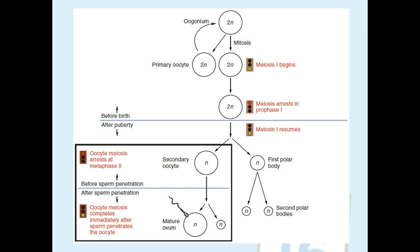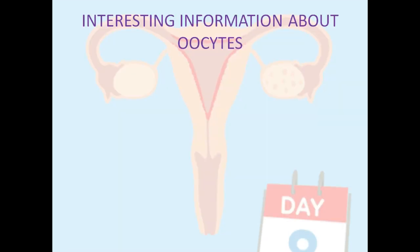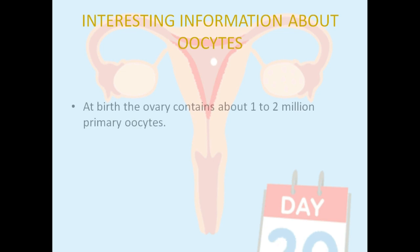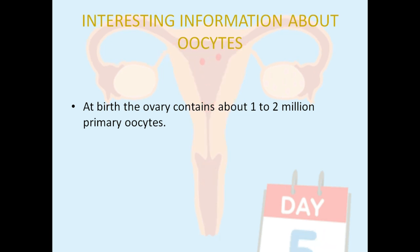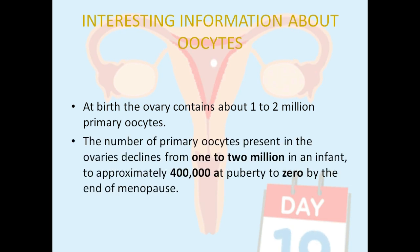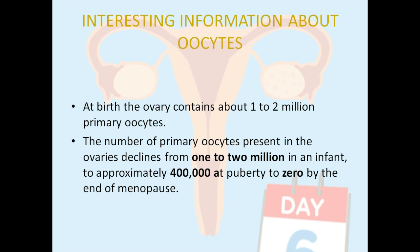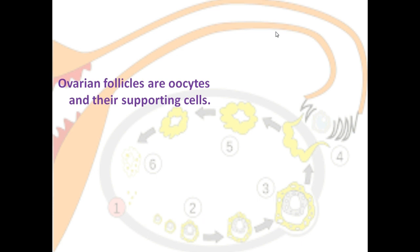This picture summarizes the whole journey of an oogonium to ovum, describing all events before birth, after puberty, before fertilization, and after fertilization. At the end of oogenesis, here are some interesting facts: at birth, the ovary contains about one to two million primary oocytes. This number declines from one to two million in an infant to approximately 400,000 at puberty, to zero by the end of menopause, because from millions only some mature and are released from the ovary while the others disintegrate.